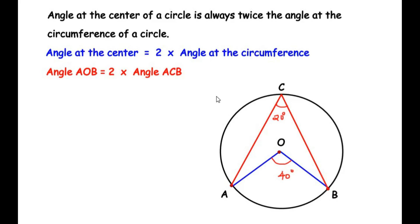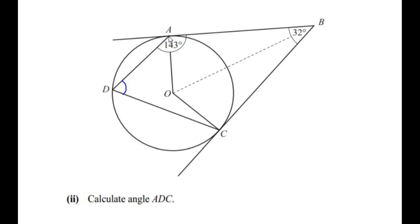Now let us apply this theorem to our example. Points A and C make an angle at the center of the circle at point O, and the same two points make an angle at the circumference at point D. In part one we found angle AOC as 148 degrees. Using the angle-at-the-center theorem, the angle at the circumference at point D is exactly half of 148, which gives us 74 degrees. So angle ADC equals 74 degrees.